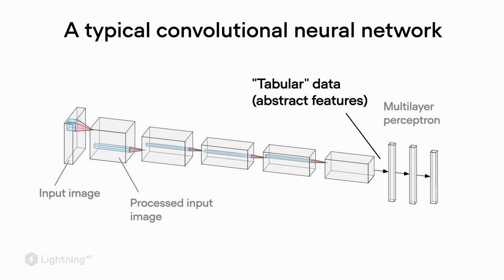To draw the analogy to the previous units, here at this point, the multilayer perceptron receives something that kind of represents tabular data. At this point, the multilayer perceptron part works exactly as before, except this tabular data here was implicitly extracted by the convolutional layers.